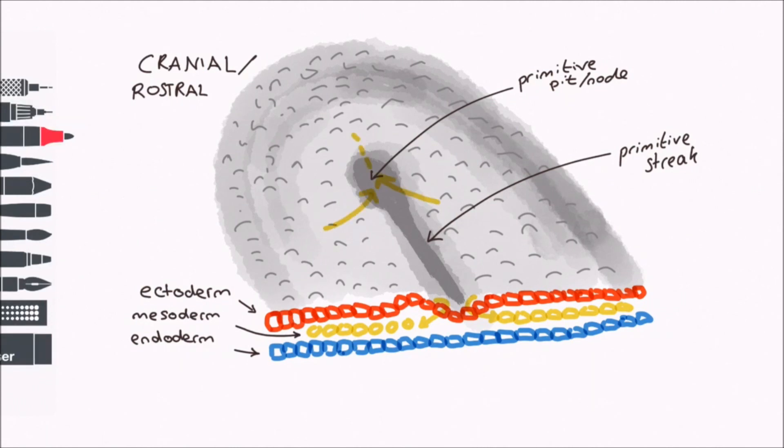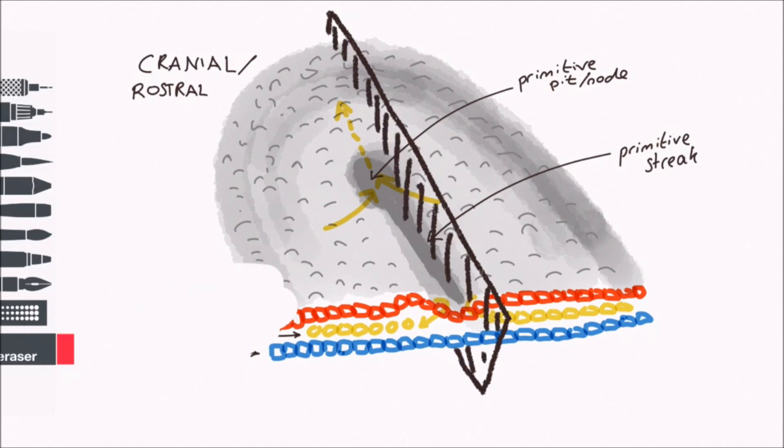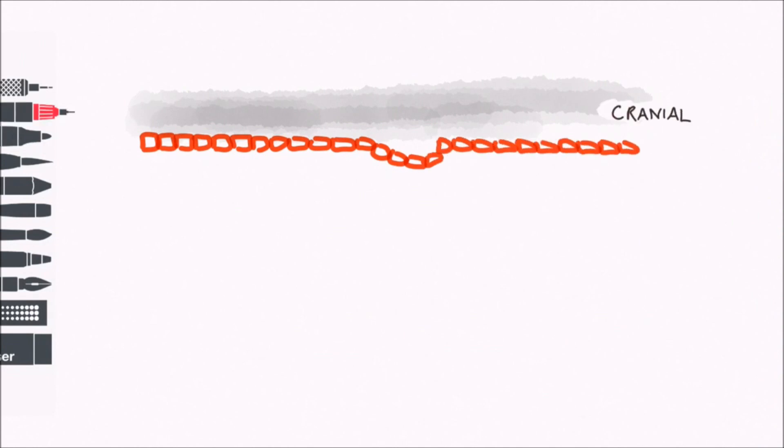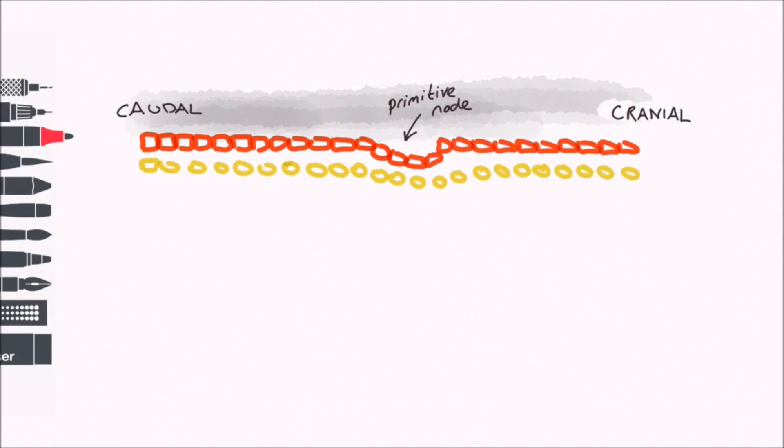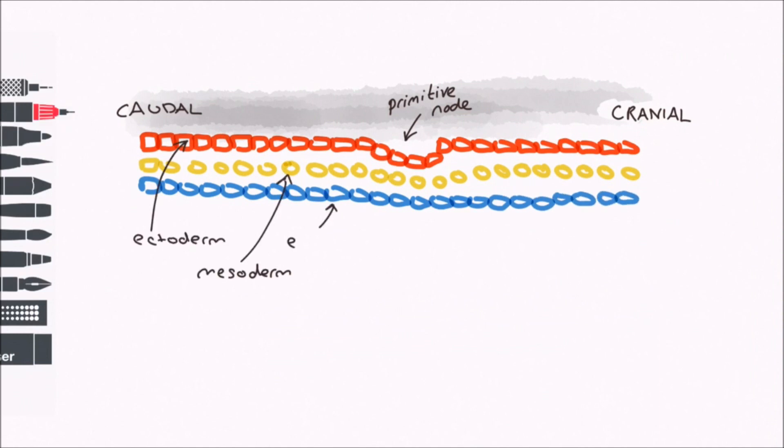Once the trilaminar disc has formed, endoderm cells invade the mesoderm from the primitive node. Let's look at this longitudinally, so we've sliced the other way along the disc. The ectoderm cells tunnel from the primitive node longitudinally and cranially along the disc, like a finger sliding into a glove. This forms a hollow tube called the notochord.